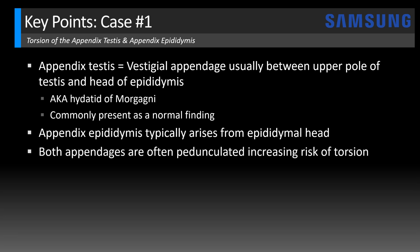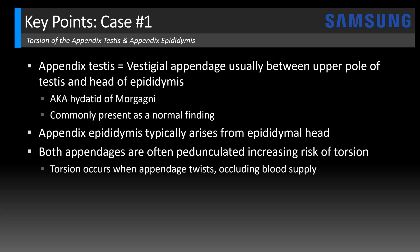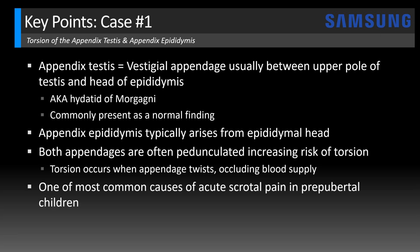Both of these appendages are often pedunculated, which increases the risk of torsion. Torsion occurs when the appendage twists, compromising the blood supply, and that causes pain. Torsion of the appendix testis is actually one of the most common causes of acute scrotal pain in pre-pubertal children — some argue it's the most common cause. It's seen most commonly in patients ages 7 to 12, but it can occur at any age, so it's wise to include it in the differential for any patient presenting with acute scrotum.